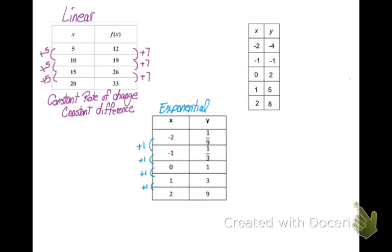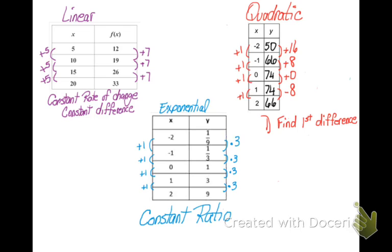Remember exponential. Your x values are all going to go up or down with addition, but your y values are going to go up by multiplication or down by division. That is called a common ratio. Now quadratic, when you first look at it, it looks like it doesn't have any pattern at all. My x's go up by one here, but look, my y's go up by 16, up by eight, up by zero,